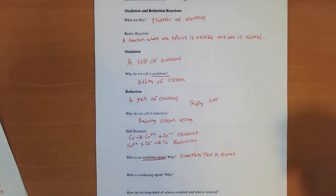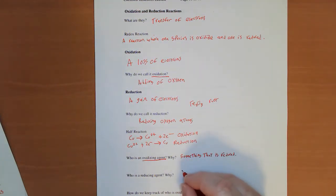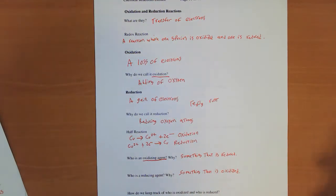So what's a reducing agent? Something that is oxidized. We can apply the same argument. If a species loses electrons, it is forcing another species to gain those electrons.